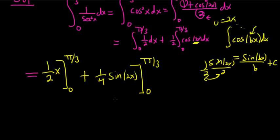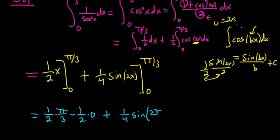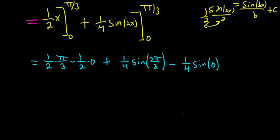Let's keep going very carefully. So when we do the first one, we first plug in the pi over 3. So it's 1 half times pi over 3, minus 1 half times 0. Then you have the plus. Same thing over here. It's 1 fourth sine of 2 pi over 3, minus 1 fourth sine of 0.